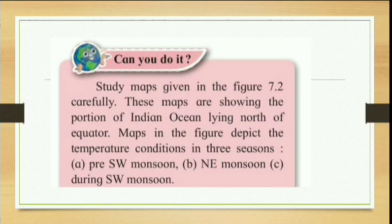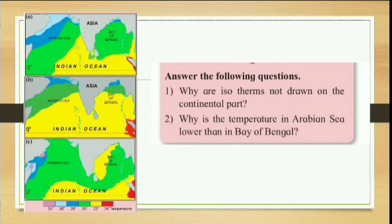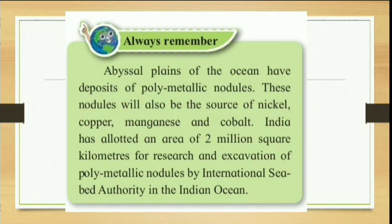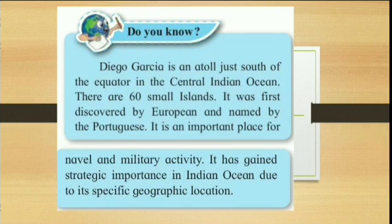Next, 'Can You Do It? Study the map in Figure 7.2' — even this is eliminated. Based on three figures, you have to answer some questions — this part is also eliminated. Then extra GK information regarding the Strait of Hormuz in the 'Do You Know' section is eliminated. Again, information about the Abyssal Plains in the 'Always Remember' section is also eliminated. Information about Diego Garcia in the 'Do You Know' section is again eliminated.